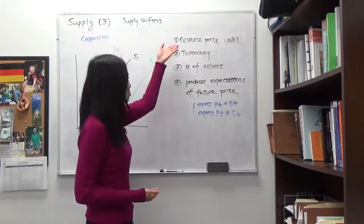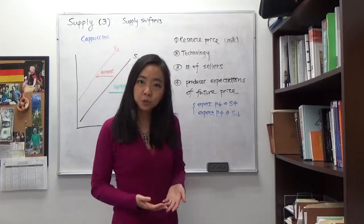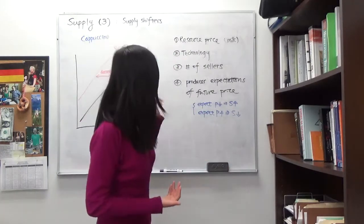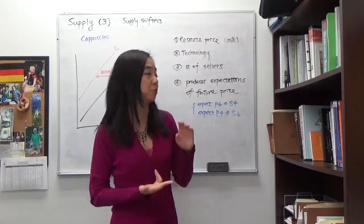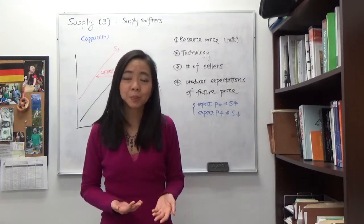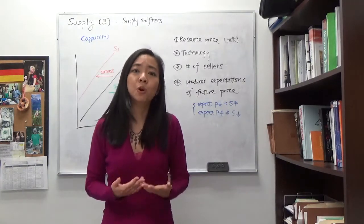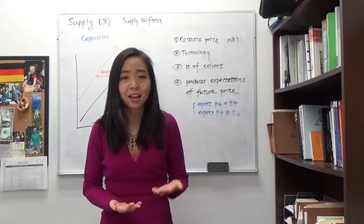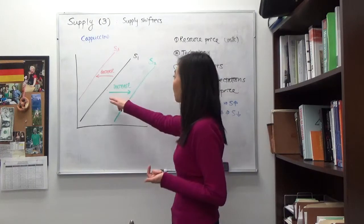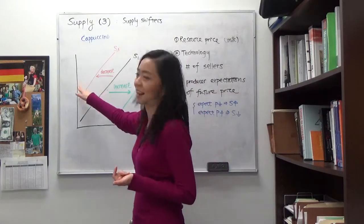So the first one is resource price. Now continue with our example of cappuccino in Franz town. We know cappuccino you need to use coffee beans and you need to use milk to make it. Now suppose the price of milk goes up, then it becomes more costly to make cappuccino. Therefore, that will decrease our supply of cappuccino and shift the supply of cappuccino to the left.